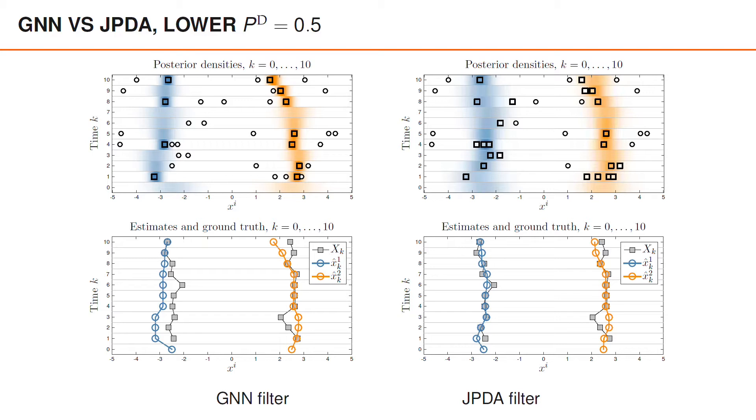This is just one particular scenario and one particular sequence of measurements. However, it does hold in general that when SNR is lower, for example like here where PD is lower, then JPDA often performs better than GNN. The reason is that when SNR is lower, there are often multiple hypotheses with significant probability. In this case, JPDA does a better approximation of the posterior density than what GNN does.